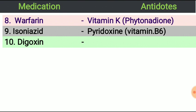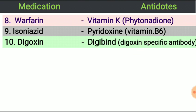Next, digoxin. Digoxin is used for heart problems such as heart failure, atrial fibrillation, and atrial flutter. The antidote for digoxin toxicity or overdose is digibind, which is a digoxin-specific antibody.